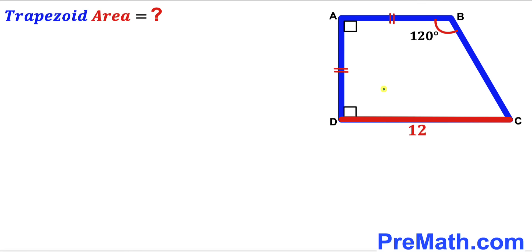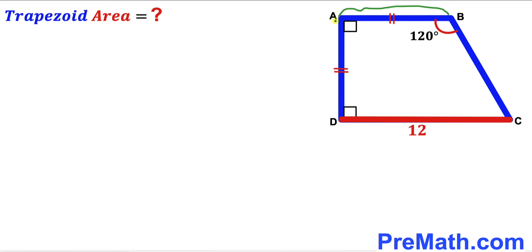Welcome to pre-math. In this video we have got this trapezoid ABCD as you can see in the given diagram, such that its base CD is 12 units, whereas its side AB equals side AD. Moreover, this angle ABC is 120 degrees, and our task is to calculate the area of this trapezoid ABCD.